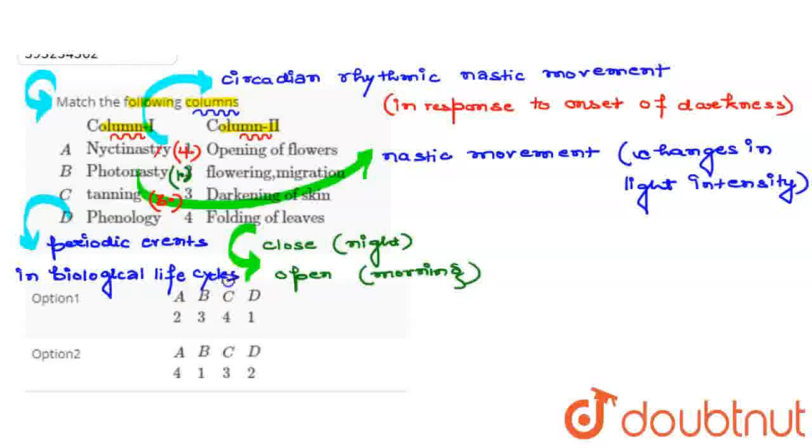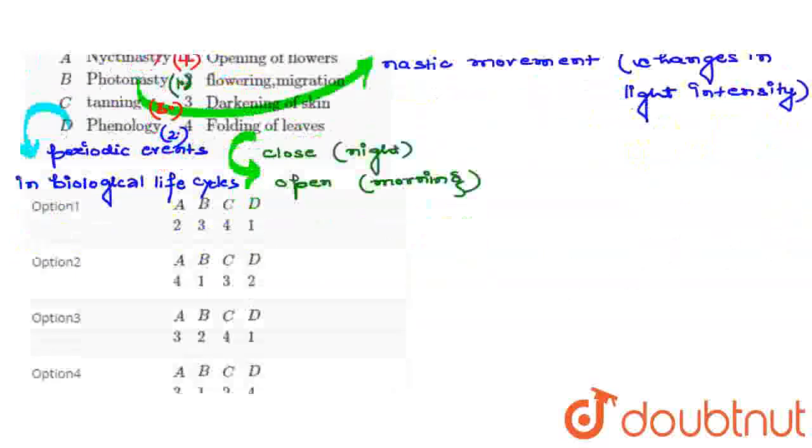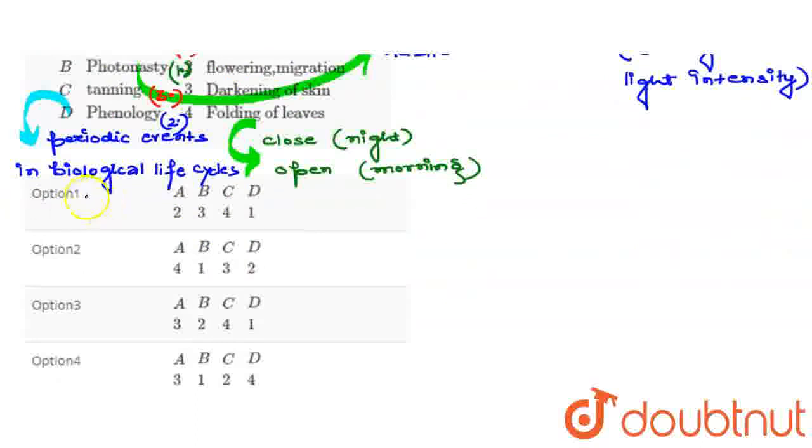तो देखेंगे options. First option हमें यहाँ पे दिया गया है: A matches with second, B matches with third, C matches with fourth and D matches with first option, गलत है. Second दिया गया है: A matches with fourth, B matches with first, C matches with third and D matches with second. तो हमारे जो यहाँ पे correct answer होगा, वो है option second and remaining here clearly the wrong options given for this question.